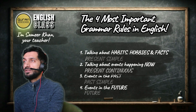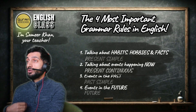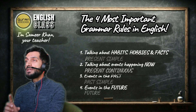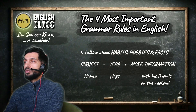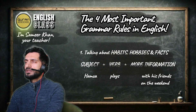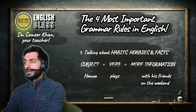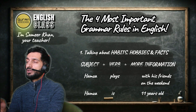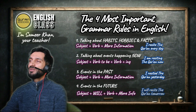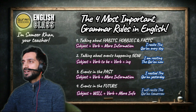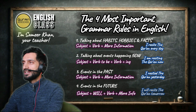Most sentences will be one, two, three, or four — either habit, hobby, or fact — and you have to use subject, verb, more information. The verb can be a normal verb or it can be the verb to be. For example: Hamza plays with his friends on the weekend — subject, verb, more information — and here we have a normal verb, so we don't need a helping verb.